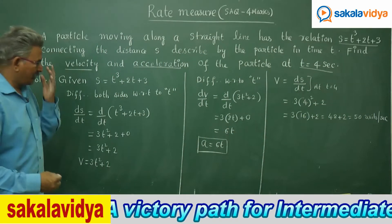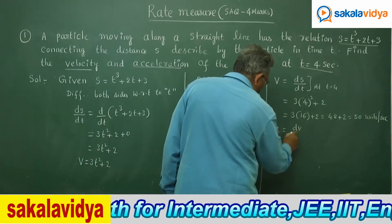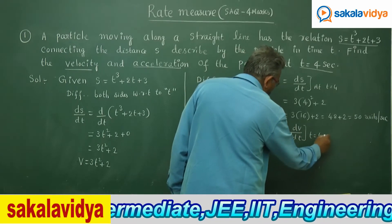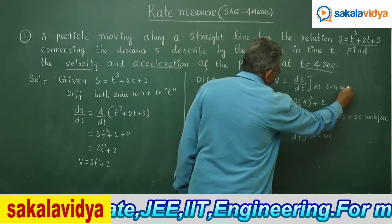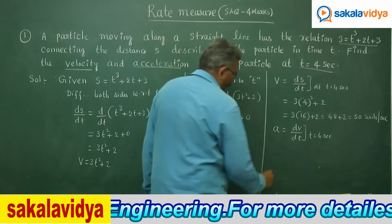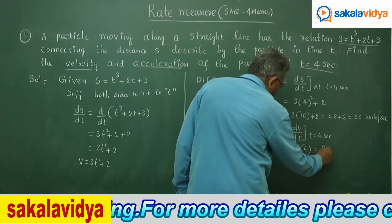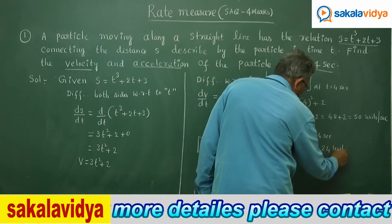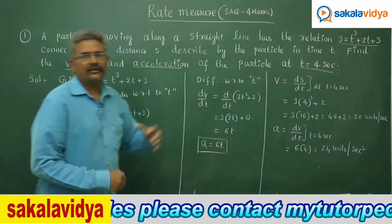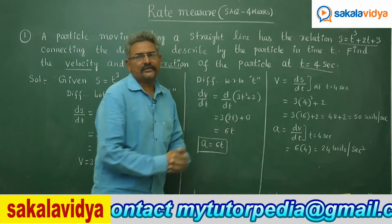Now we need to find out acceleration. Acceleration equals dv by dt at the instant t is equal to 4 seconds. Substituting: 6 into 4 equals 24 units per second squared. So in this way, we can find out the velocity and acceleration.